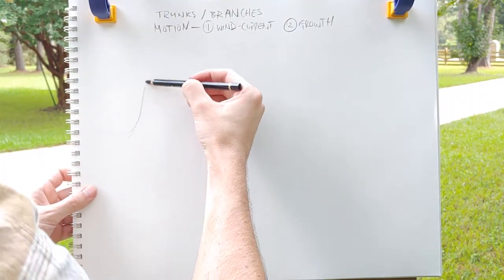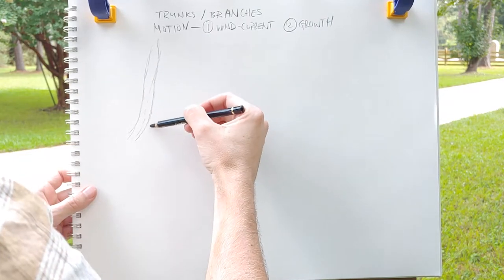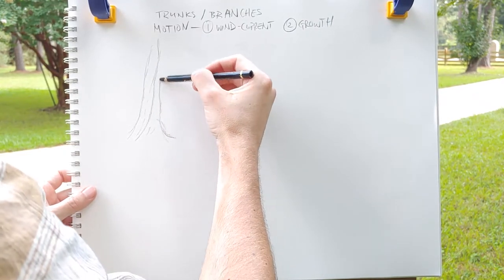You're looking for any current motion, like any wind that's happening, and you're also looking for the motion of how the tree grew.